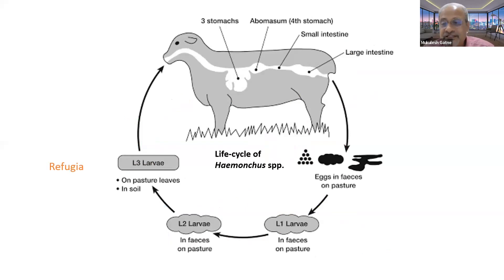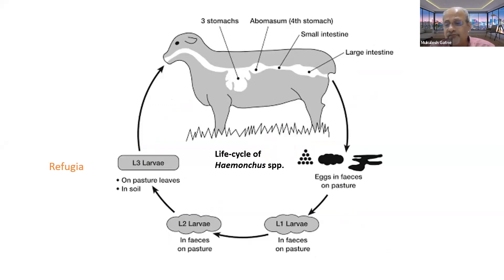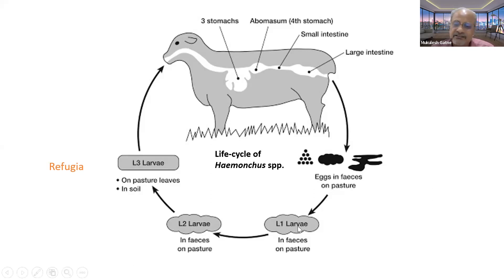Coming to Haemonchus, which are present in the abomasum — there they produce a large number of eggs which are voided in the feces. Within 24 to 48 hours under suitable climatic conditions — temperature hovering around 25 to 30 degrees and relative humidity more than 70% — these eggs hatch. The larvae develop through L1 and L2 stages and are converted to L3 stages, which are the infective stages. When these L3 stages are swallowed by the animal, they become infected.